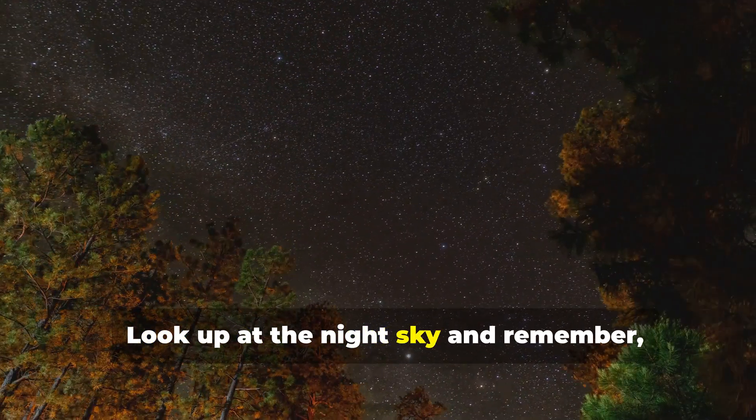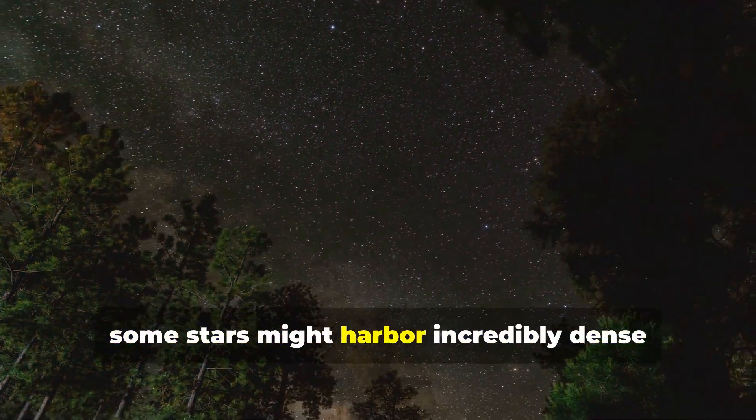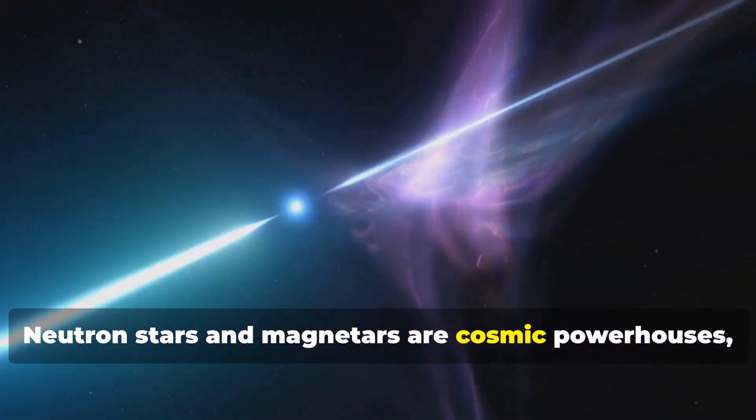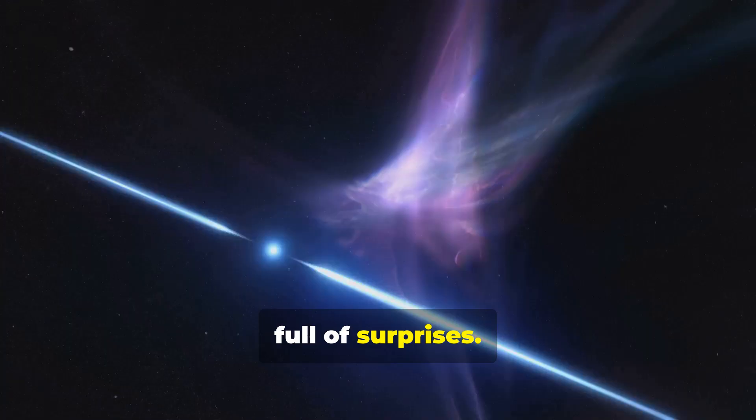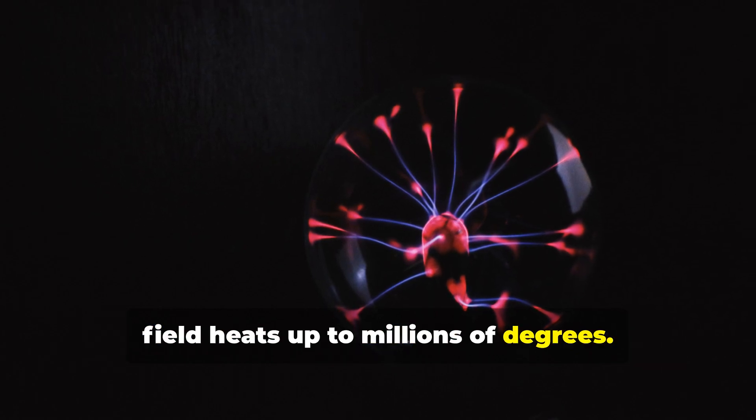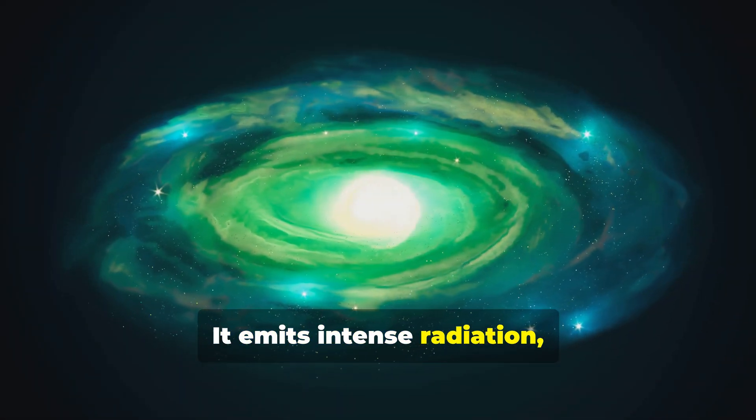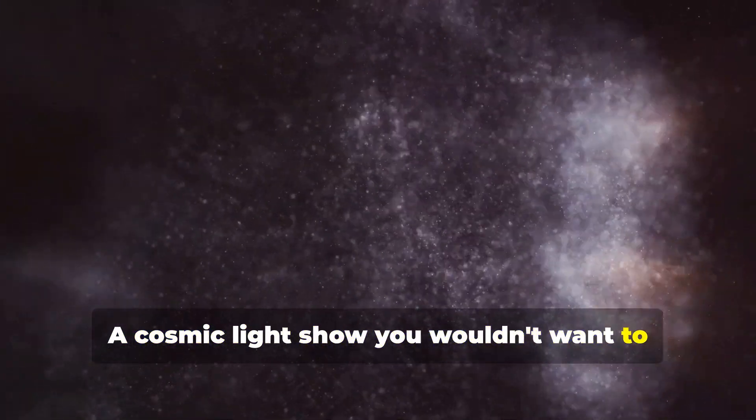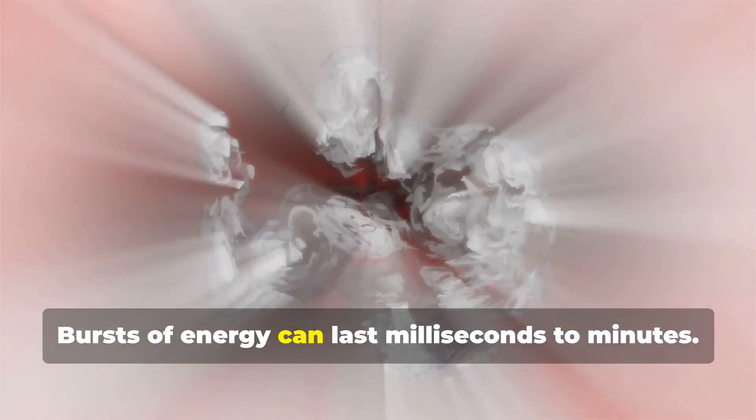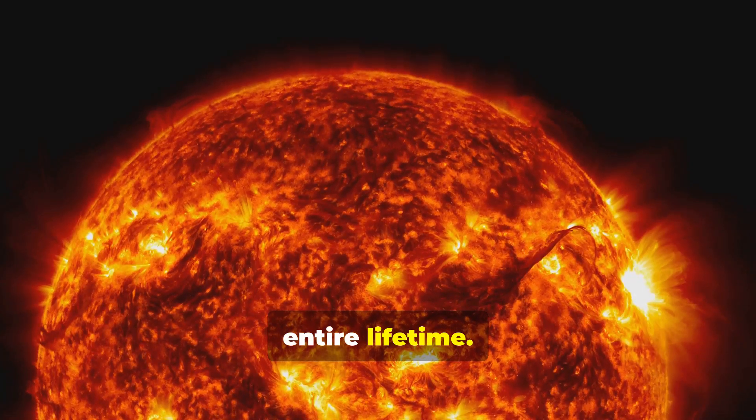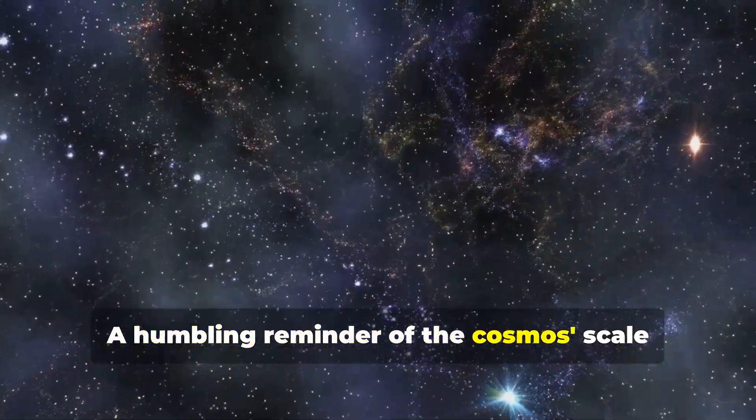Look up at the night sky and remember, some stars might harbor incredibly dense and magnetic objects. Neutron stars and magnetars are cosmic powerhouses full of surprises. Material caught in a magnetar's magnetic field heats up to millions of degrees. It emits intense radiation like X-rays and gamma rays, a cosmic light show you wouldn't want to be close to. Bursts of energy can last milliseconds to minutes, releasing more energy than our sun in its entire lifetime. A humbling reminder of the cosmos' scale and power.